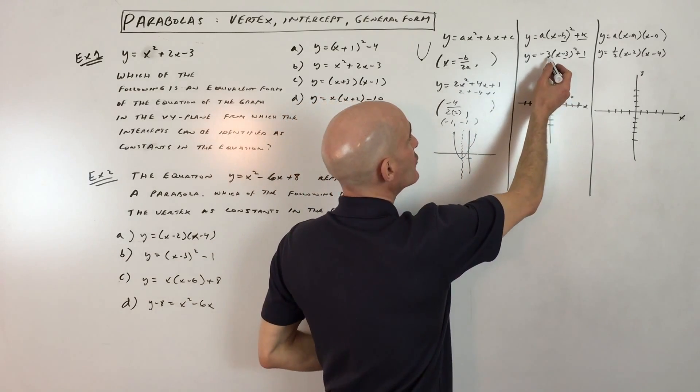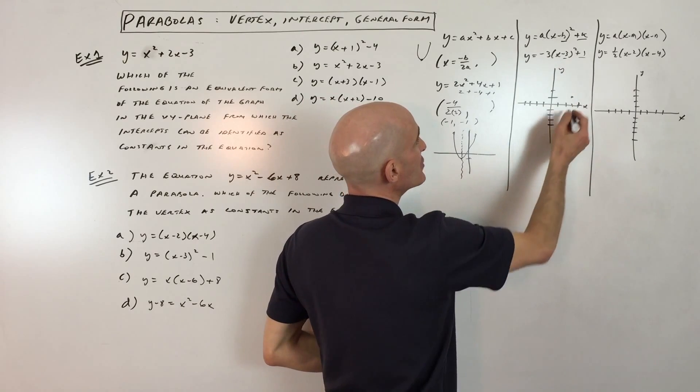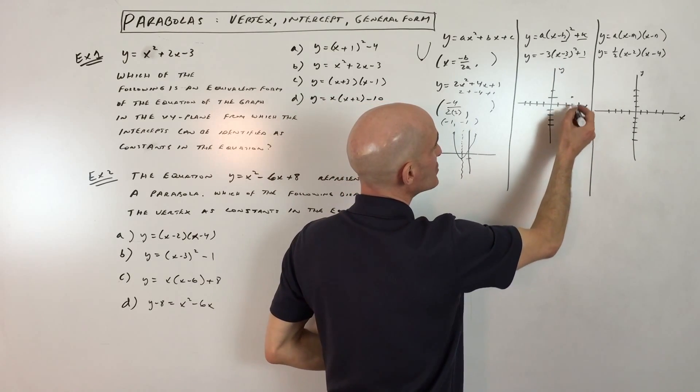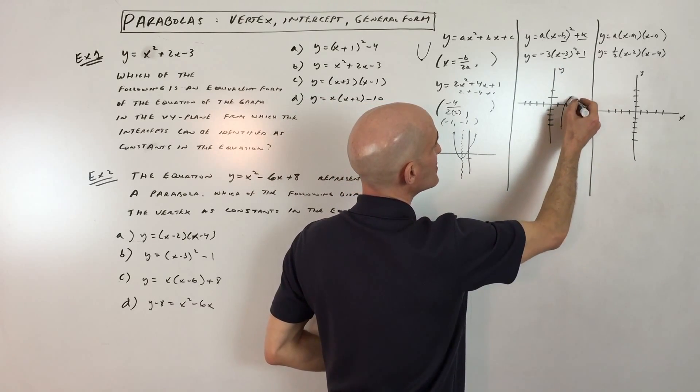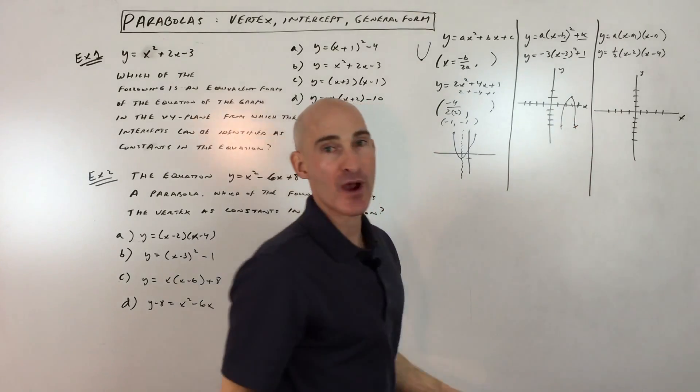And then what the a value does, since it's negative, it's going to open down, and the 3 is going to stretch it, which means it's going to be narrower, it's going to go down faster. So this graph is going to look something like this, approximately.